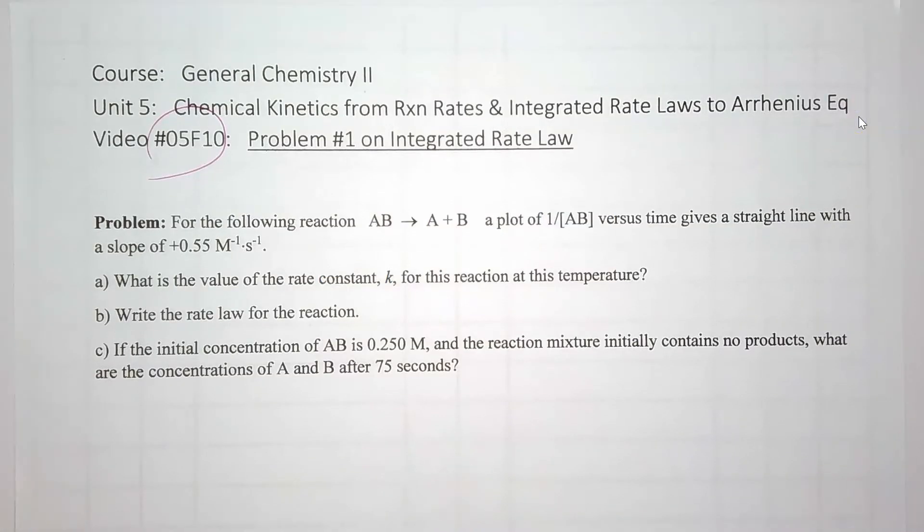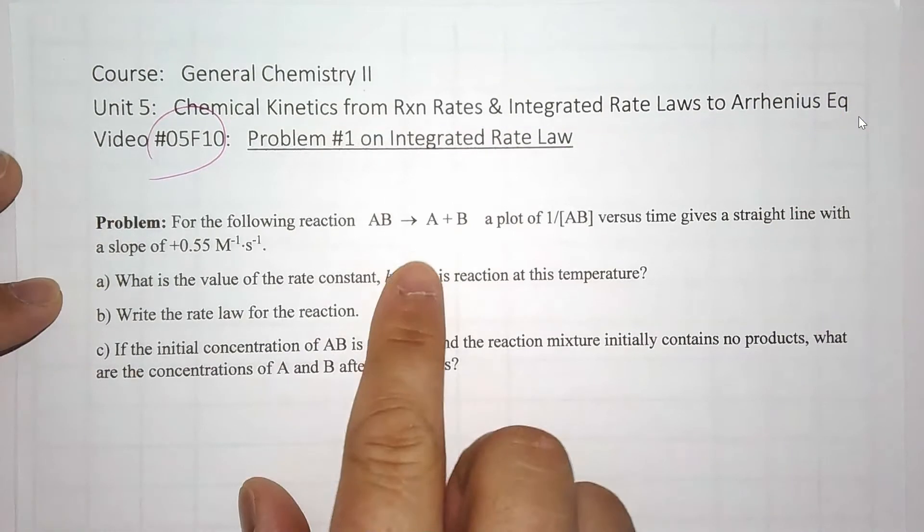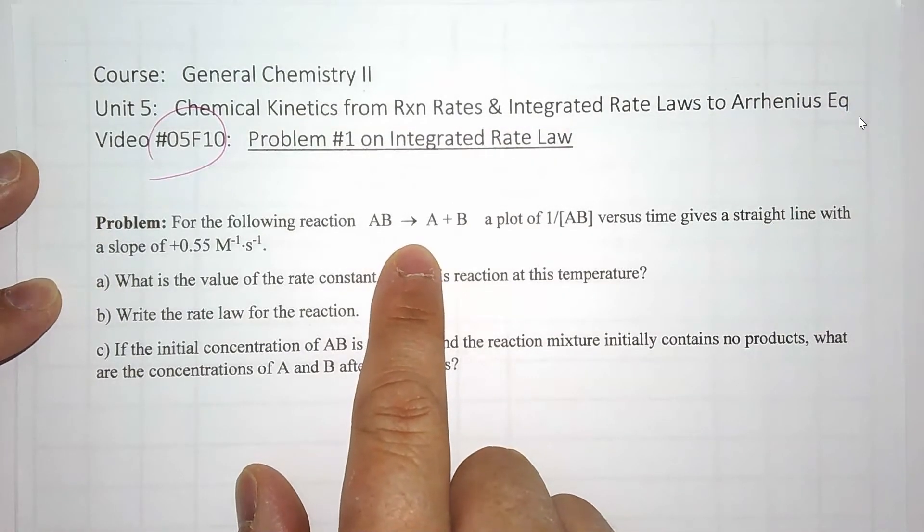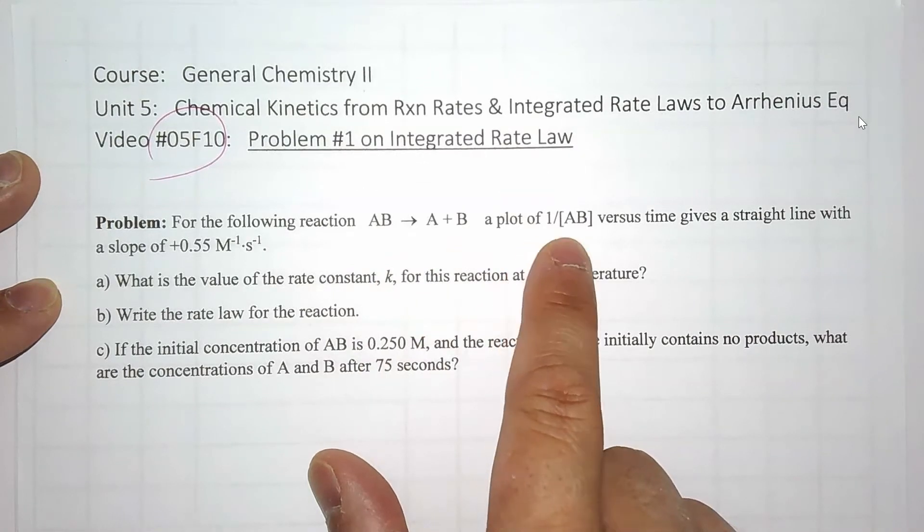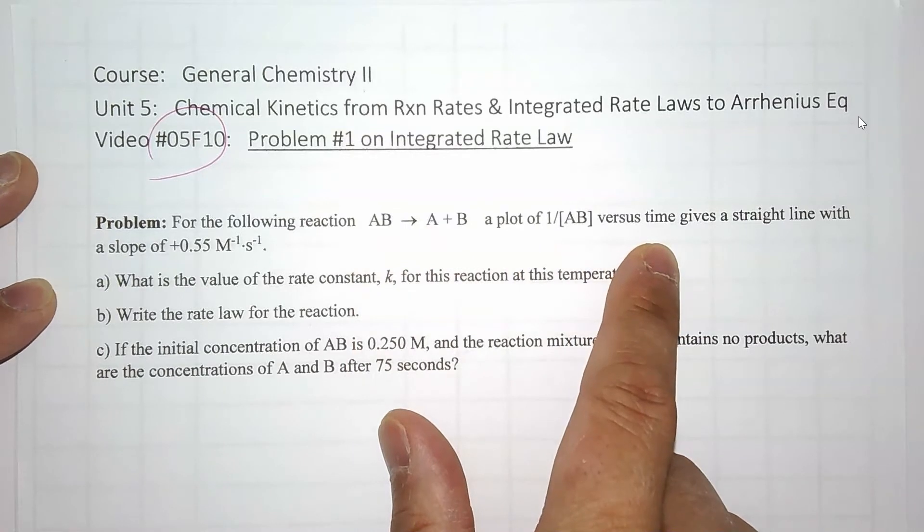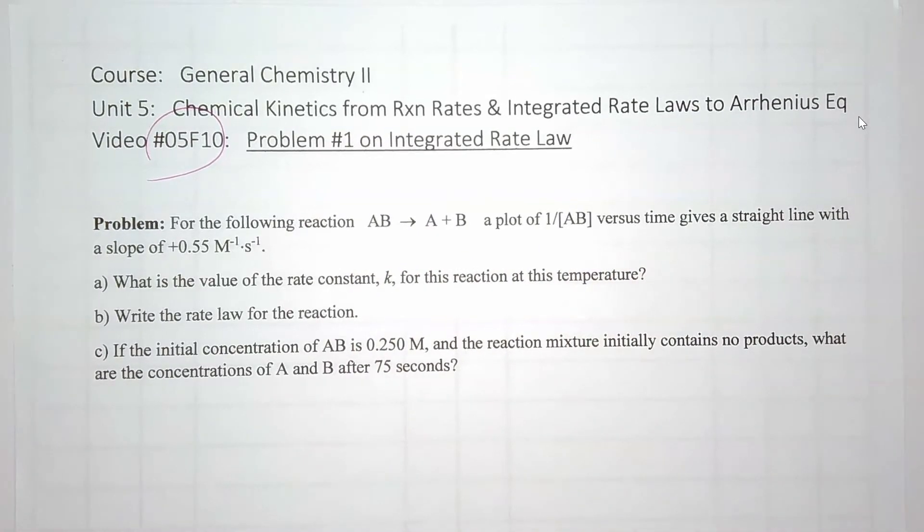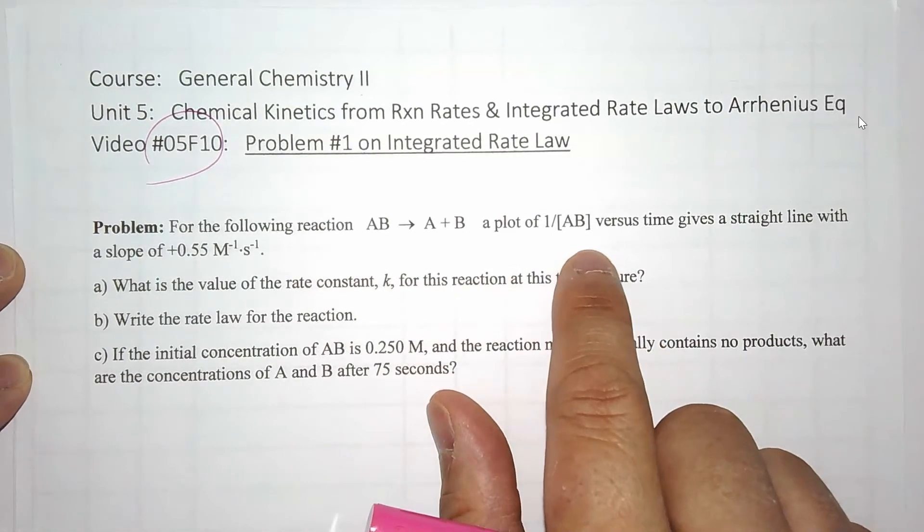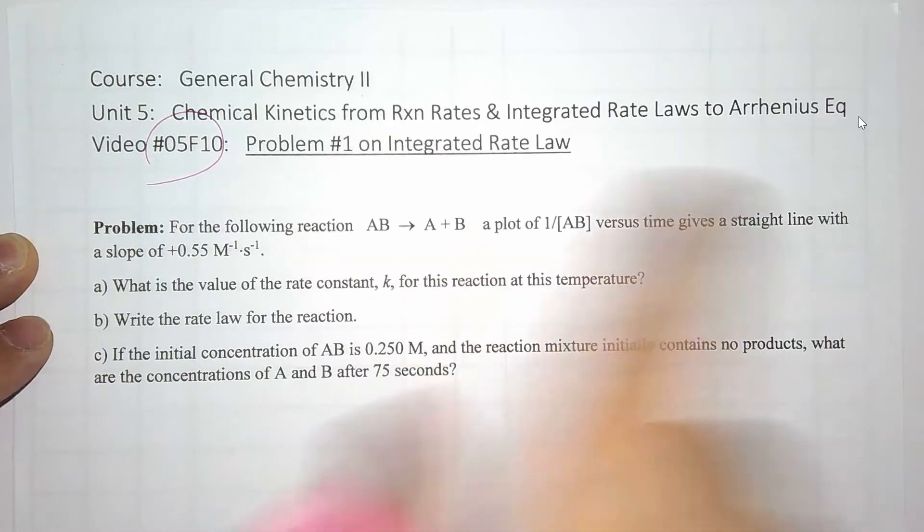Now, how do I know we want to use an integrated rate law? The problem says that for this reaction, a plot of 1 over the concentration of the reactant versus time gives a straight line. The integrated rate laws are equations of lines where you can tell what order the reaction is depending on which graph gives a straight line.